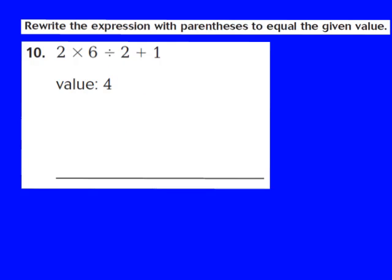Let's take a look at question number 10. Question 10 says to rewrite the expression with parentheses to equal the given value. They give me the expression 2 times 6 divided by 2 plus 1, and I have to rewrite it with parentheses so that the value equals 4. The first step I'll take is to evaluate the expression without parentheses.